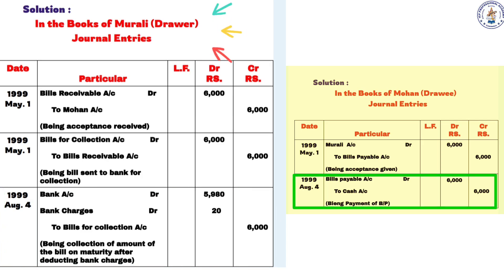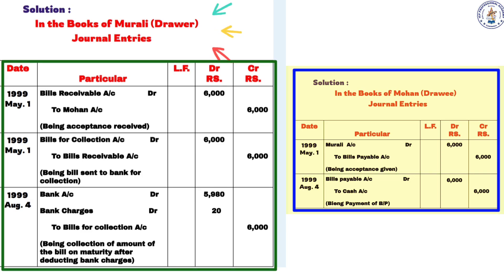In Mohan's books, on August 4th: Bills Payable Account Dr. to Cash Account — being payment on maturity. Summary of entries: Bills for Collection to Bills Receivable; Bank Account Dr. and Bank Charges Account Dr. to Bills for Collection; Bills Payable Account Dr. to Cash — payment made at maturity.